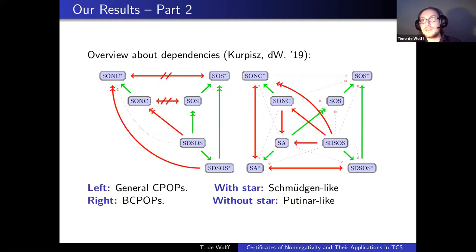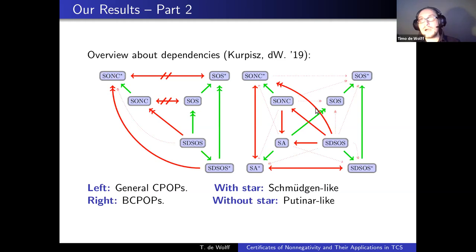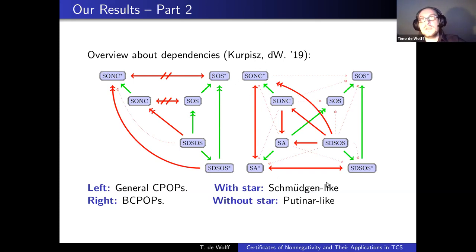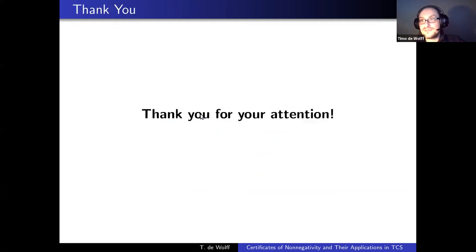Here is the full result in two diagrams: the left side shows the general situation, and the right side shows the Boolean hypercube. Green results are ours, red results were known before, dotted arrows indicate diagram chasing. Star superscript denotes Schmüdgen-type hierarchy, no star denotes Putinar-type. Double arrows mean strict containment. Thanks very much for your attention.